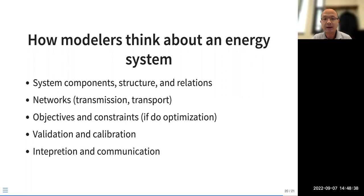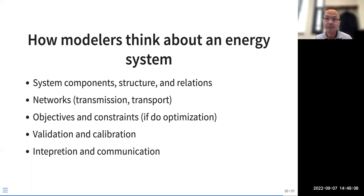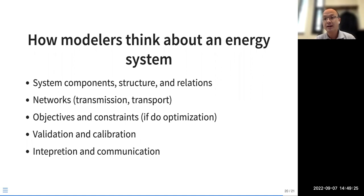We pay attention to system components, structures, and relationships. We need to show logic and structure — for example, discussing key indicators of population, affluence, and technology (the so-called IPAT function), or how different economic sectors relate to energy consumption. We also pay attention to networks: transmission networks, transport networks, and pipeline networks — these help build linkages showing how energy service components are interconnected by time and location.